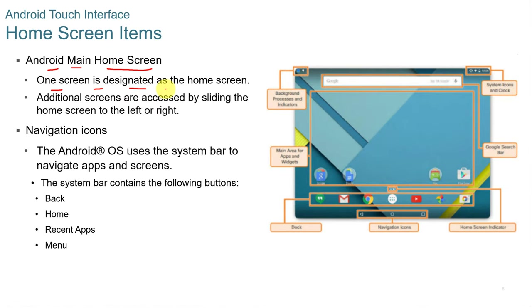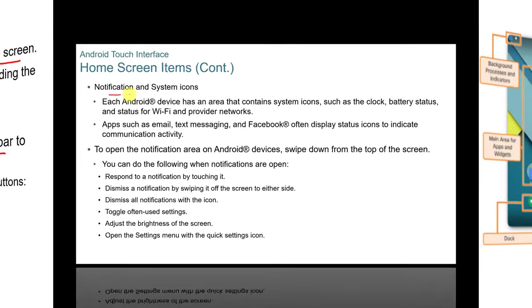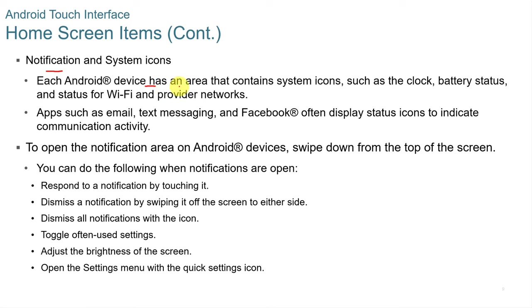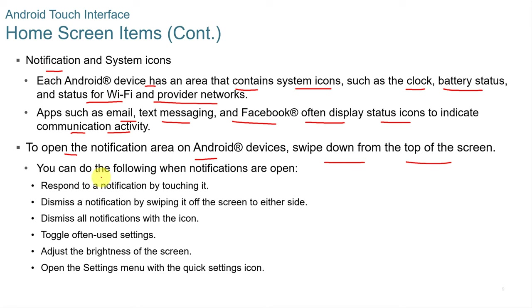On the Android main home screen, one screen is designated as the home screen and additional screens are accessed by sliding left or right. The Android OS uses the system bar to navigate apps and screens. The system bar contains the following buttons: back, home, recent apps, and menu. Each Android device also has an area containing system icons such as the clock, battery status, Wi-Fi status, and provider network. To open the notification area on Android, swipe down from the top of the screen.